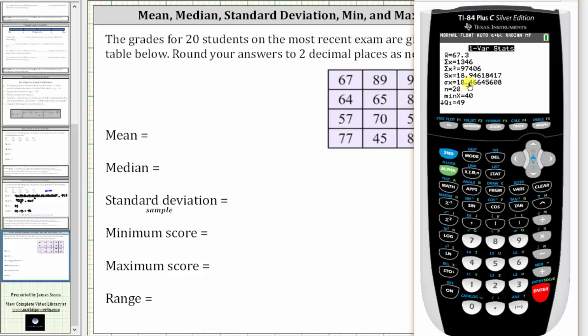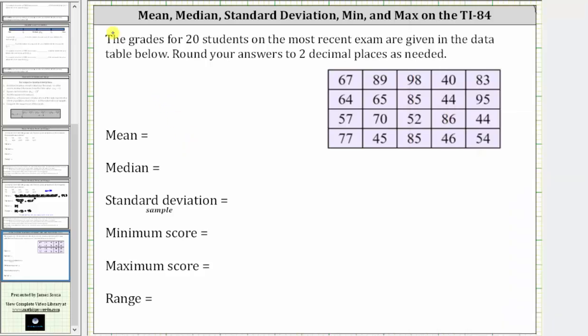Remember, we were told to round to two decimal places. Let's go ahead and record this information, and then we'll scroll down further. So again, the mean is 67.3, and the sample standard deviation is 18.95.